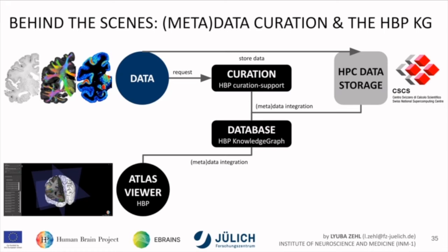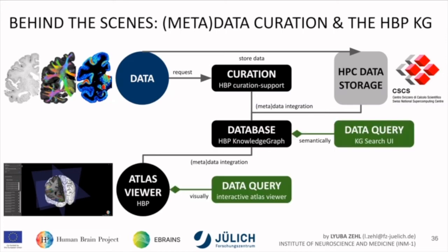The reason why there are so few data visible in the Atlas viewer compared to how many datasets we have in the Knowledge Graph is exactly that — we have to manually process and integrate them, check quality, and check back with the data experts to make sure no mistakes were made. But once it's in place, you can do data queries based on semantic search, and in the Atlas viewer you can also do data queries by visually exploring the brain: start with a brain area, see related datasets, preview them, go back to the Knowledge Graph for more information.